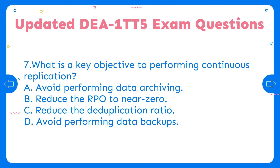Question 7: What is a key objective to performing continuous replication? a. Avoid performing data archiving. b. Reduce the RPO to near zero. c. Reduce the deduplication ratio. d. Avoid performing data backups.